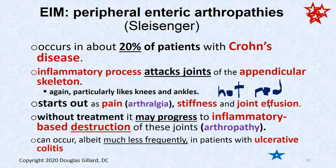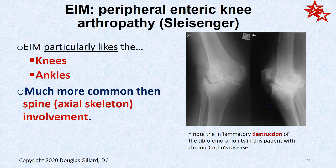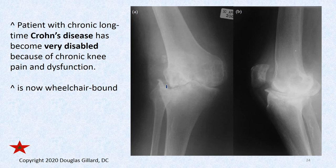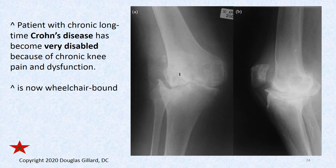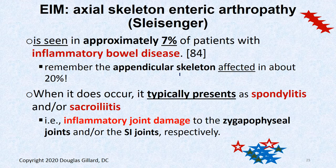This joint destruction is much more common in the knees and ankles than the axial skeleton. Radiographic images show destroyed joint spaces, new bone formation, and osteolytic bubble-like changes indicating destruction. This patient with Crohn's disease had progressive knee destruction, ultimately ending up in a wheelchair because nobody recognized that Crohn's can affect the knees.